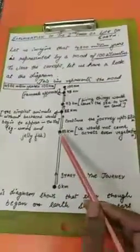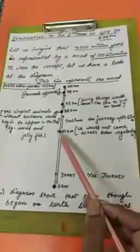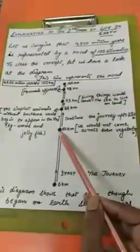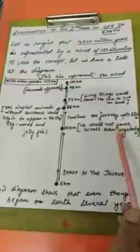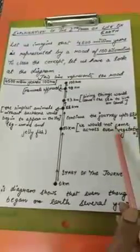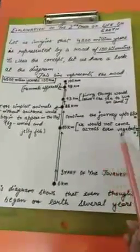If we start the journey from 0 kilometers to the midpoint of 100 kilometers — that is 50 kilometers — we see that we would not come across any vegetation. Vegetation is the growing of plants without any social or physical activity.